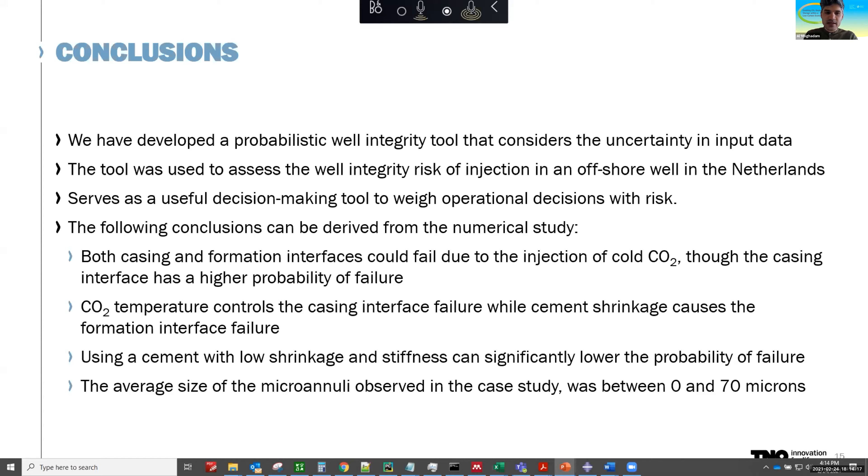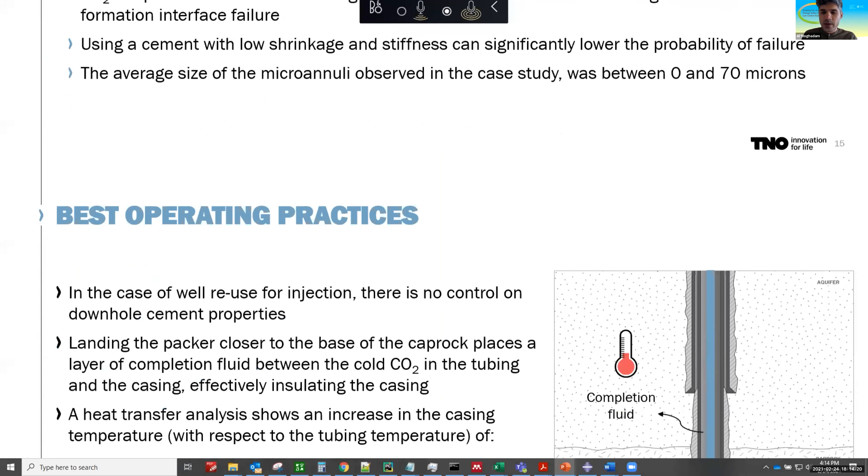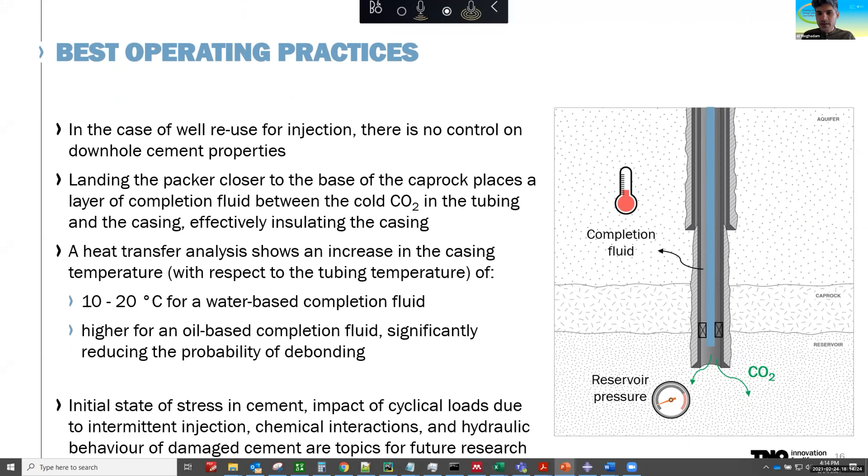There are some interesting findings here in terms of best practices where we've noticed that if we place, if we land the packer on the lower end of the caprock, this essentially adds a cushion of completion fluids between this tubing and the casing, which actually acts as an insulator. So even if it's a water-based fluid, there is a 10 to 20 degrees increase in casing temperature, which essentially drops the probability of failure quite significantly. And if even better, there is an oil-based completion fluid there that could really enhance, increase the casing temperature, the temperature that the casing will experience. So these sort of conclusions could come out by changing these different parameters, we can use our tool to minimize the risk to the point that we're comfortable with.